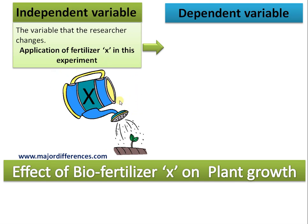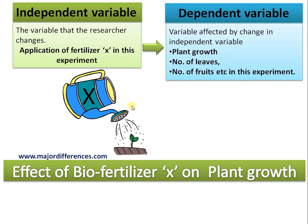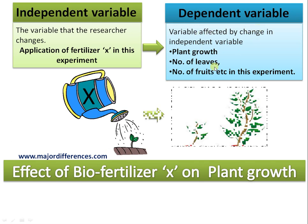The dependent variable is a variable that is affected by the change in the independent variable. The researcher thinks that by applying this independent variable, other variables will be affected, like plant growth, number of leaves, number of fruits, etc. So the dependent variable is affected by the change in the independent variable.